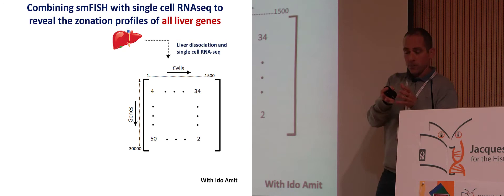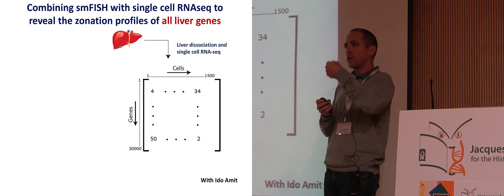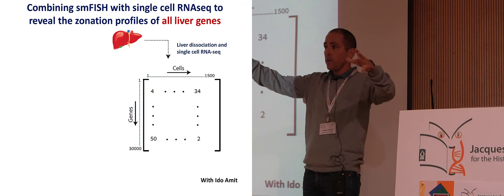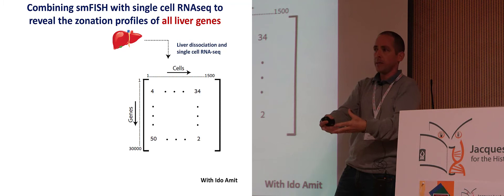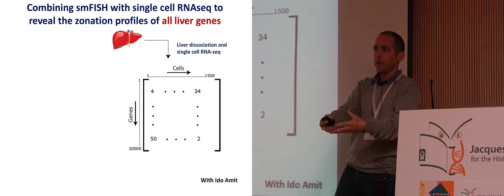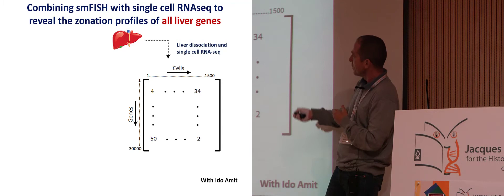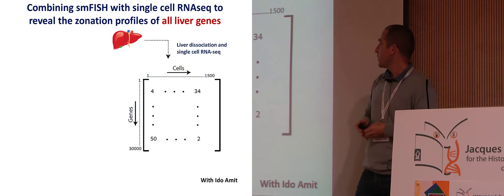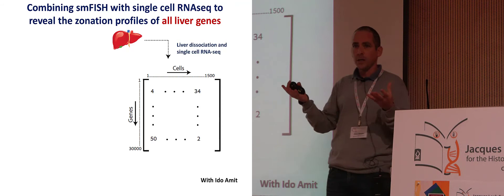The technique is single cell RNA sequencing, as mentioned by Ellen. With single molecule FISH, I'm only measuring a single gene. In single cell RNA sequencing, I can dissociate the liver and FACS-sort single hepatocytes into capture plates. An hepatocyte falls into a well, it bursts up, and with poly-T primers I catch all the RNA molecules in the cell. I can get tables of 30,000 genes by 1,500 hepatocytes — every column is an hepatocyte, and I get the RNA reads of every gene in the hepatocyte transcriptome. But the problem is that I completely lost the spatial information because I dissociated the tissue.